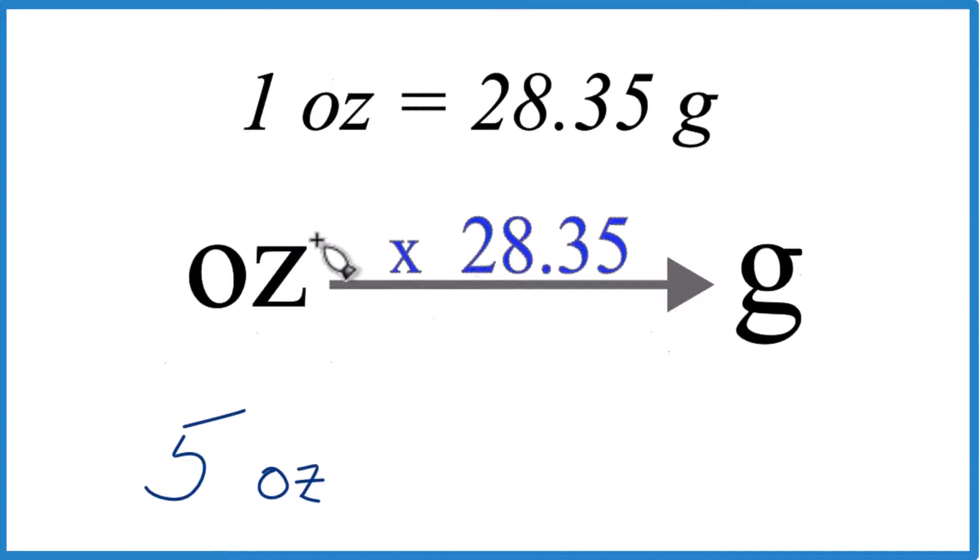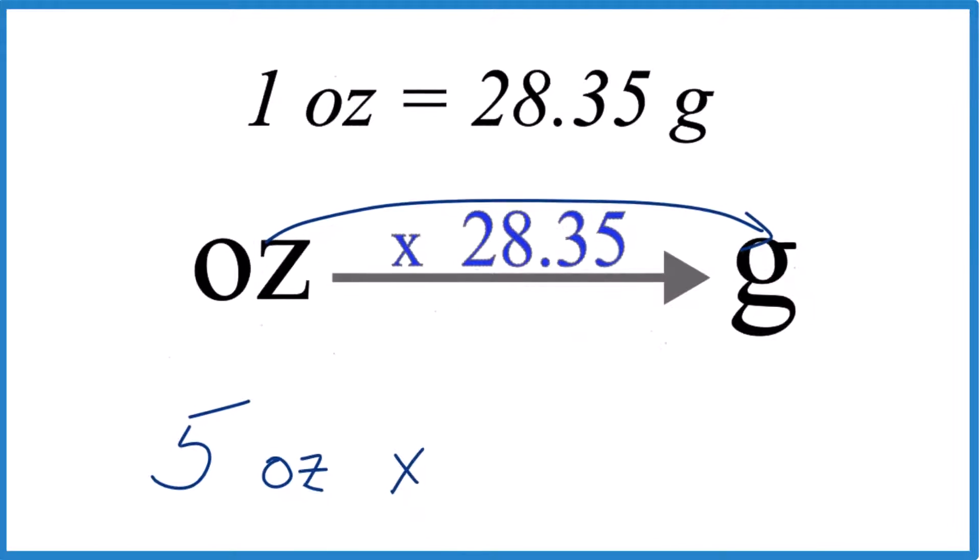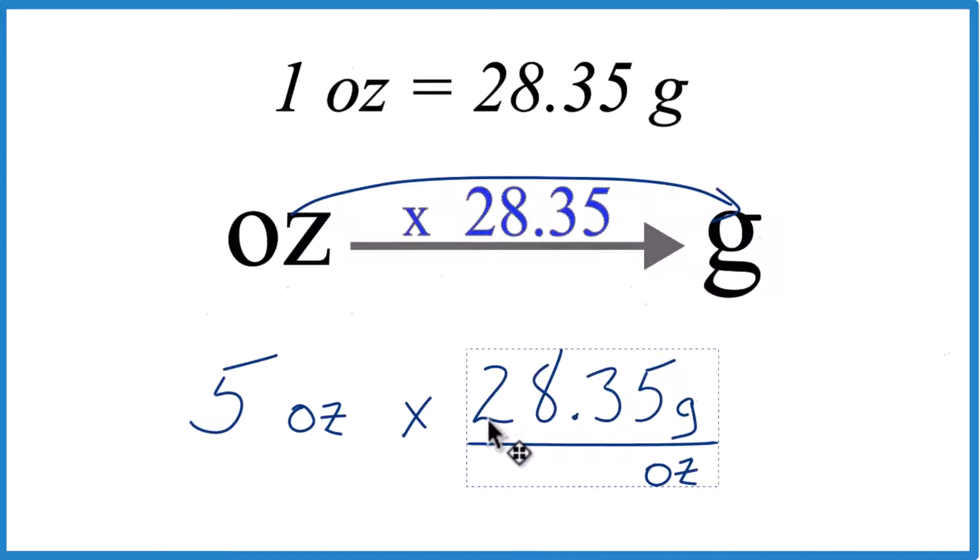So if we want to convert ounces to grams, what we're going to do is multiply by 28.35, like this. So we have our 5 ounces, and we multiply that by 28.35.